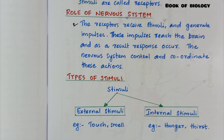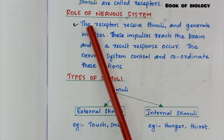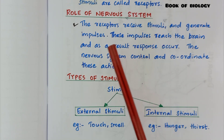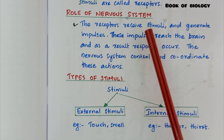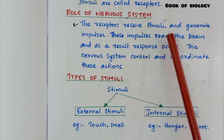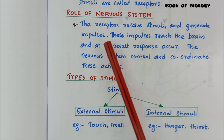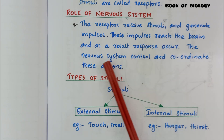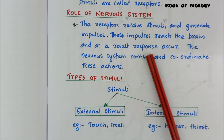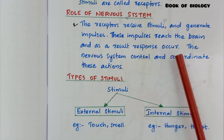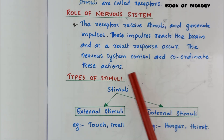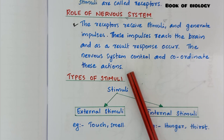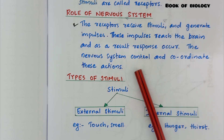Next heading: role of nervous system. The receptors receive stimuli and generate impulses. These impulses reach the brain and as a result, a response occurs. The nervous system controls and coordinates these actions.